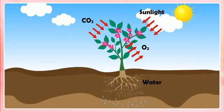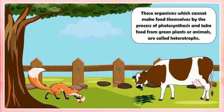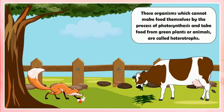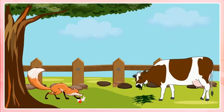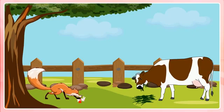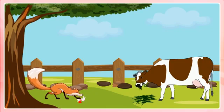For example, green plants. Heterotrophs are those organisms which cannot make food themselves by the process of photosynthesis and take food from green plants or animals. They are called heterotrophs and their mode of nutrition is called heterotrophic. All the non-green plants and animals including human beings are heterotrophs.